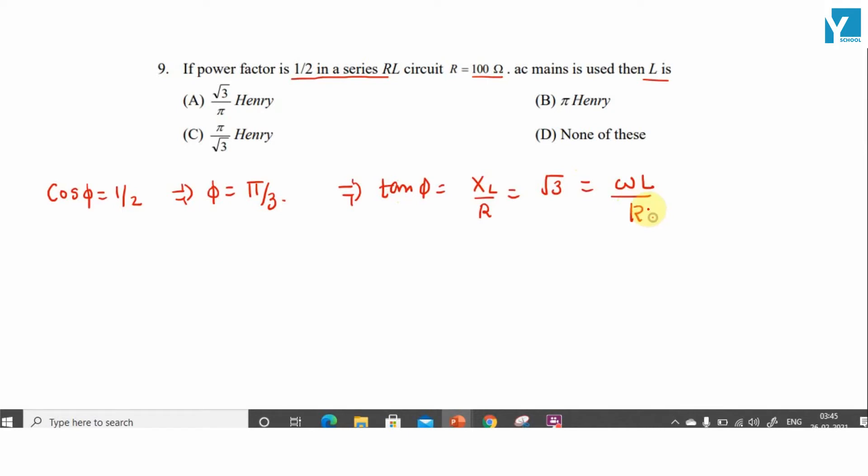omega L by R. So this implies R 100 into root 3 divided by omega is equal to L.